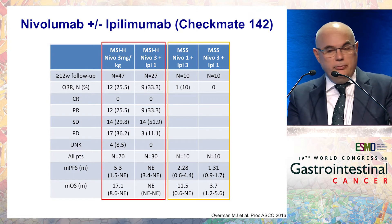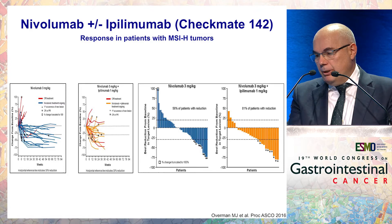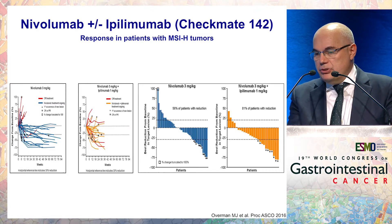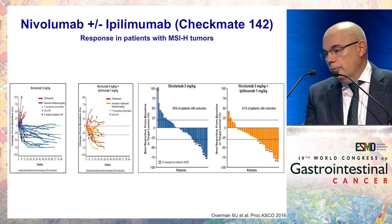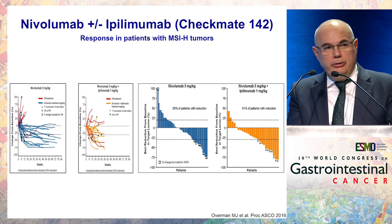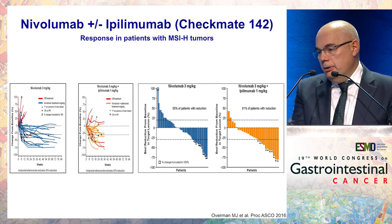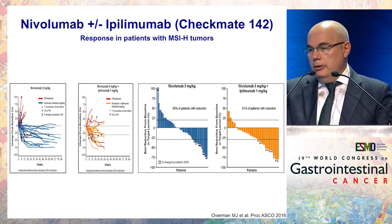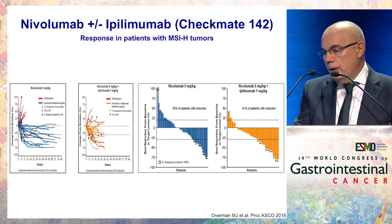In the preliminary data comparing nivolumab alone to nivolumab plus ipilimumab, we didn't see major differences in response rate, although slightly more patients had stable disease with the combination. Looking at the spaghetti plots and waterfall plots between the two cohorts, there are no dramatic differences, though this is very preliminary and early data. It would be premature to draw final conclusions on whether a CTLA-4 inhibitor added to nivolumab increases response rate and survival.